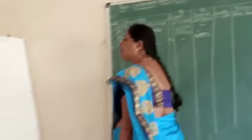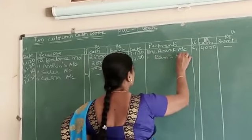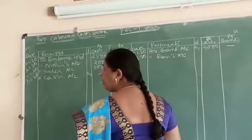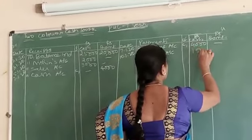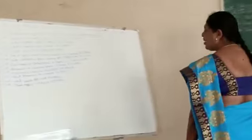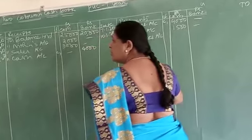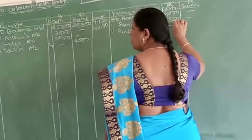Come to the credit side. Date 10/1/2020. Cash purchase by check, come to the credit side, buy purchase account, in the bank column, and that is 5,000. Date is 12.